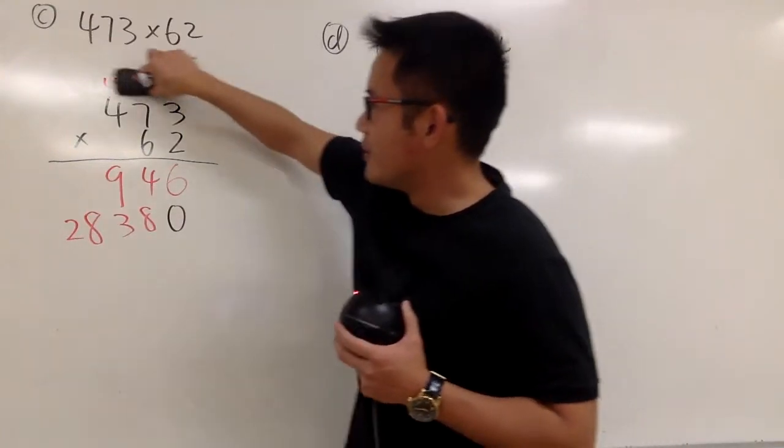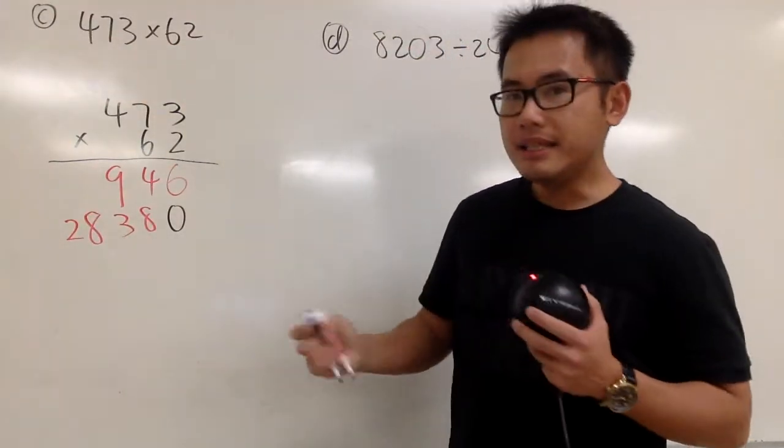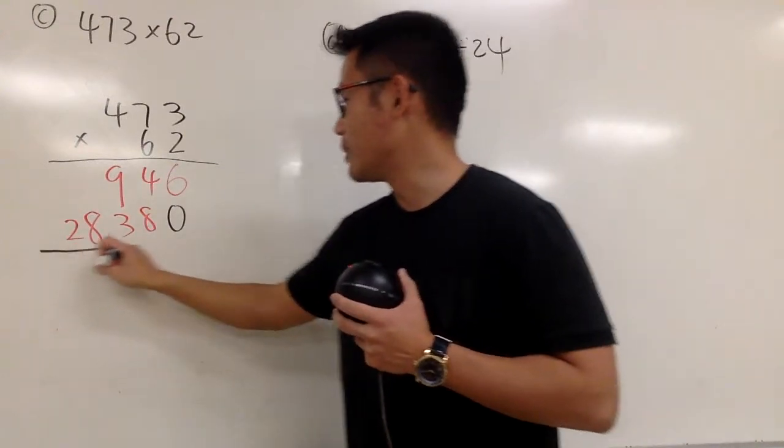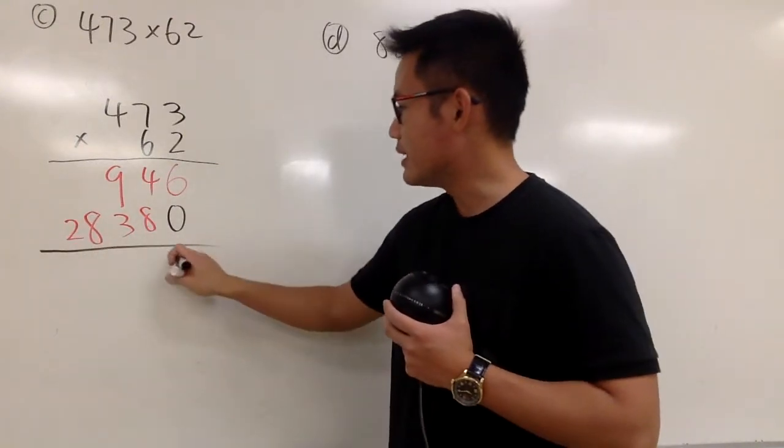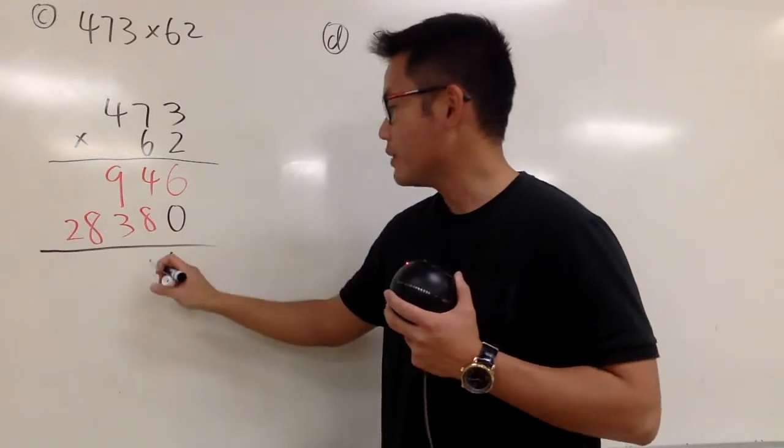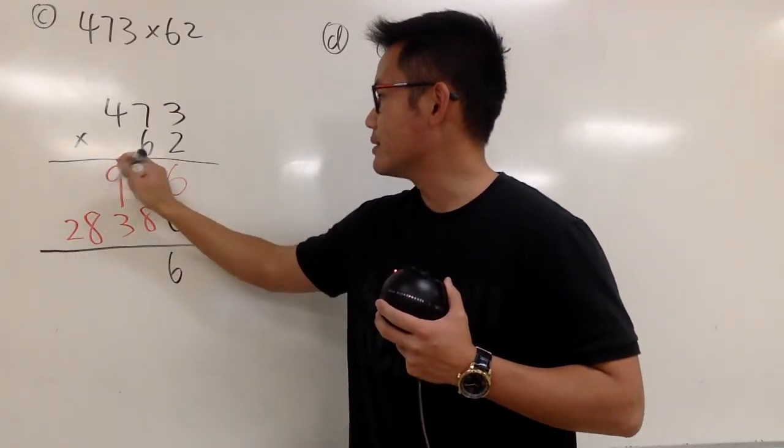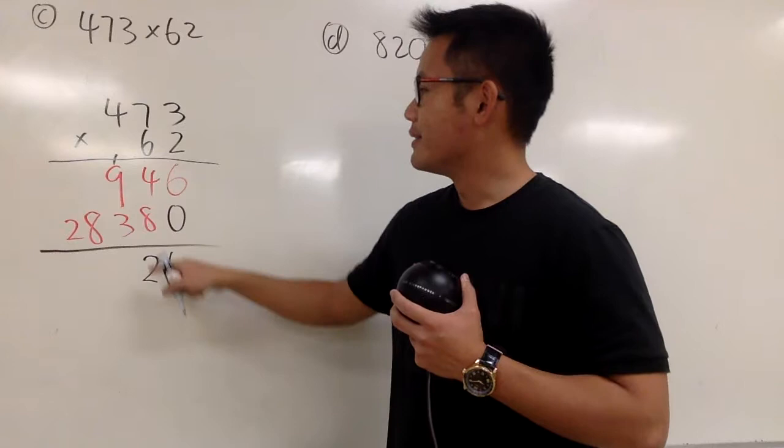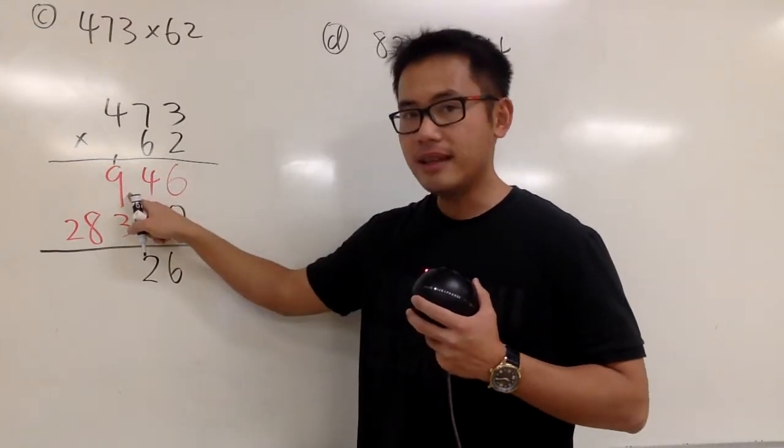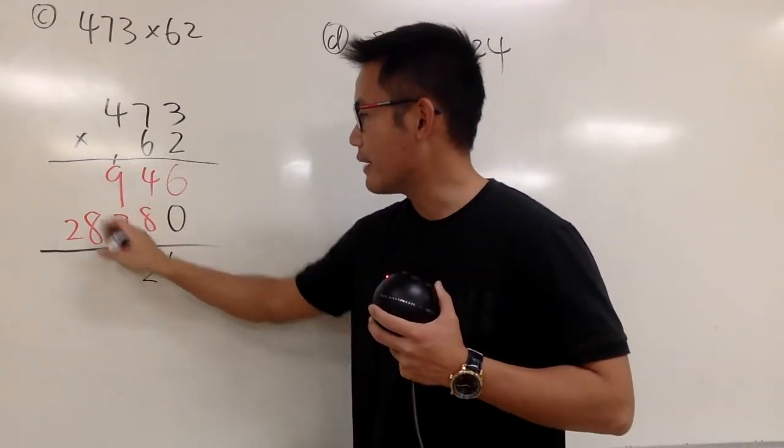And in the end, we are just going to add them up. So now, 6 plus 0 is 6. 4 plus 8 is 12. So I will put down 1, 2, like this. And then, 1 plus 9 is 10. 10 plus 3 is 13. So we have the 1, 3.